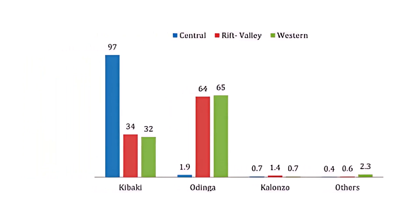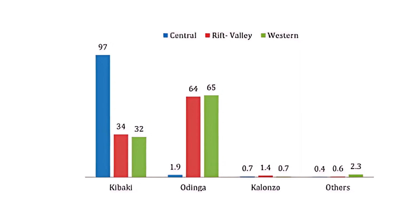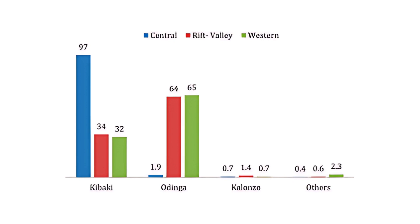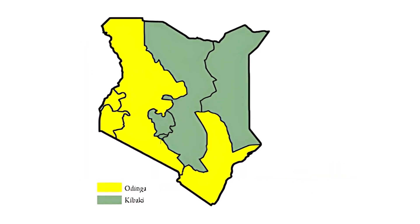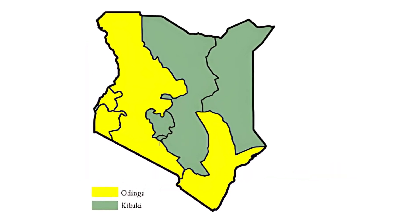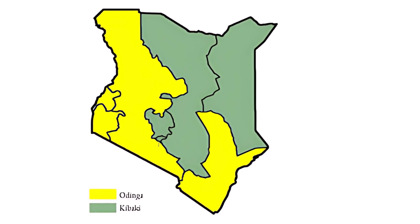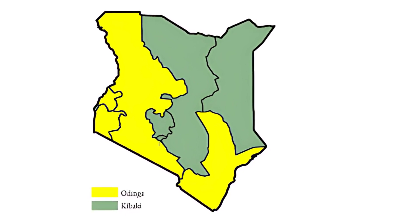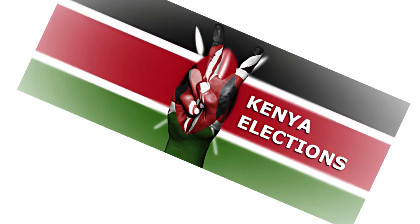2. Stuffed ballot boxes: Instances of stuffed ballot boxes were reported in various constituencies across Kenya. Observers noted that both sides engaged in this practice, with ballot boxes being filled with fraudulent votes to manipulate the election outcome. For example, in one constituency, opposition candidate Raila Odinga purportedly won 100.5% of valid votes, highlighting the extent of fraudulent practices employed.